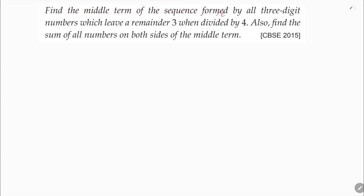Find the middle term of the sequence formed by all 3-digit numbers which leave a remainder 3 when divided by 4. The first 3-digit number is 100 and the last is 999. The numbers divisible by 4: 4 times 25 gives 100, which is exactly divisible.